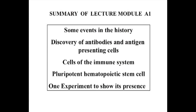Let us summarize some of the points that were dealt with in the previous lecture. We dealt with some of the events in the history of immunology which led to the discovery of antibodies and macrophages. We looked at the different kinds of cells in the immune system and the concept that all these cells arose from a pluripotent hematopoietic stem cell. Due to lack of time in the last lecture, we were not able to go into the experiment that was done to show the presence of this hematopoietic stem cell.